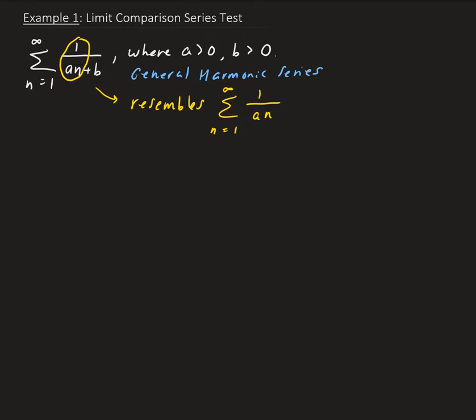To use the limit comparison test, we're going to take the limit of the nth term of the series that resembles this original series, and then divide it by the nth term of the series that's given. So we're going to have the limit as n approaches infinity of (1 over a times n), all over (1 over a sub n plus b).